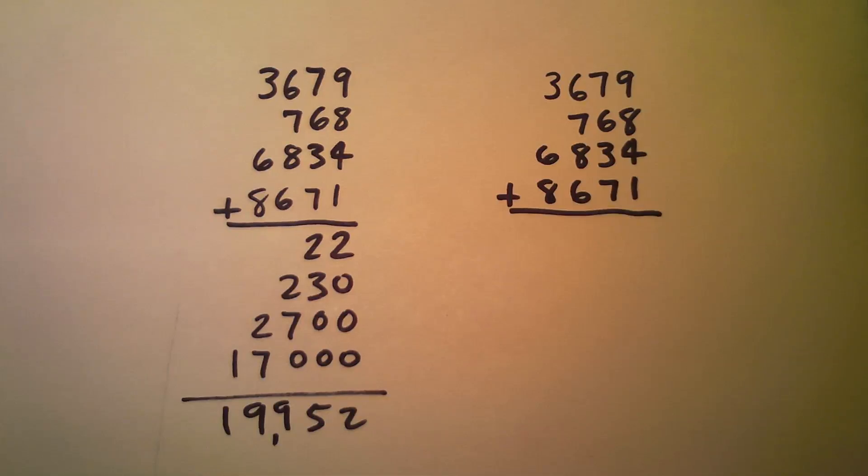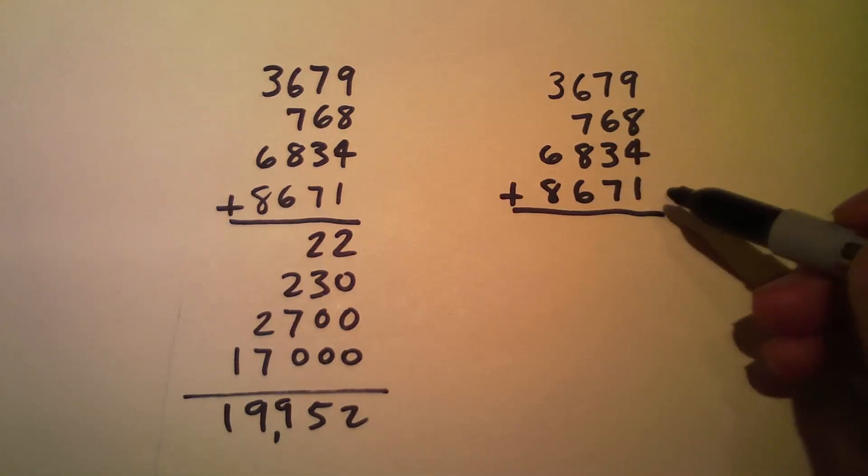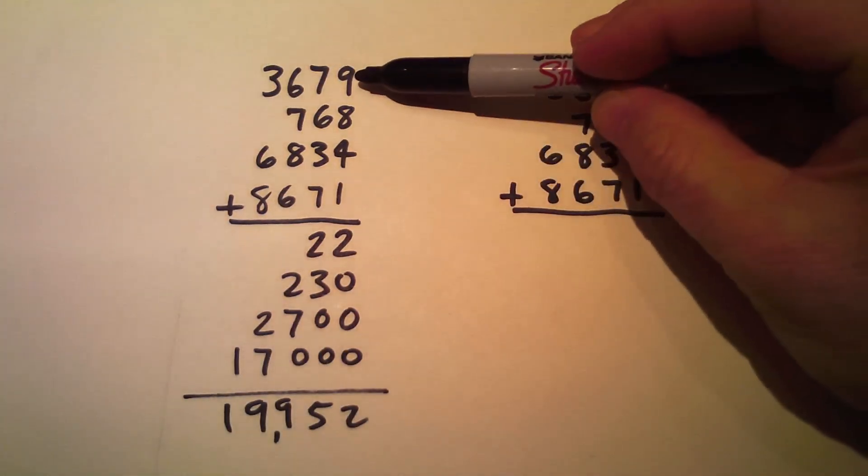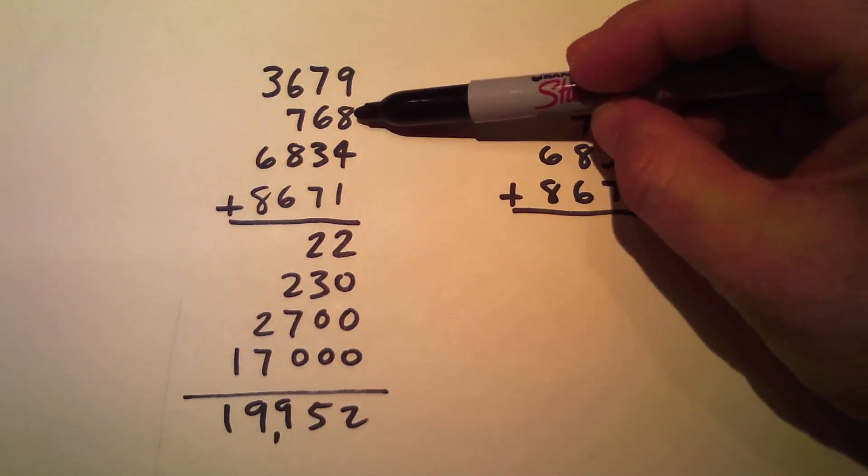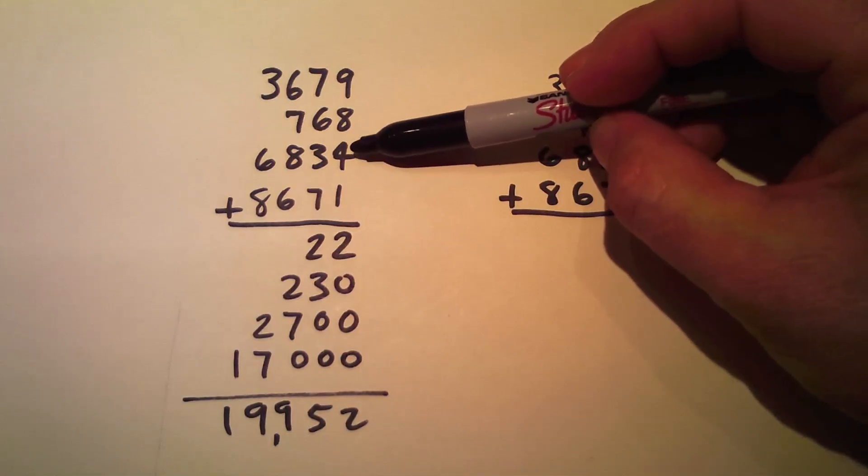So let's see if we get the same thing from the scratch method. I'm going to notice over here with the partial sums method, I had 9 plus 8 is 17, and then I added 4, and I had to keep up with, I was up into the 20s at that point. I had to keep up with that.